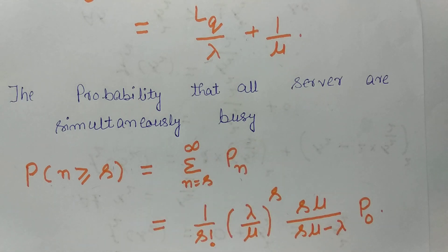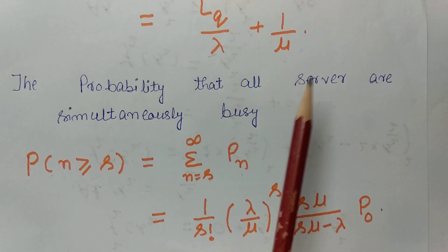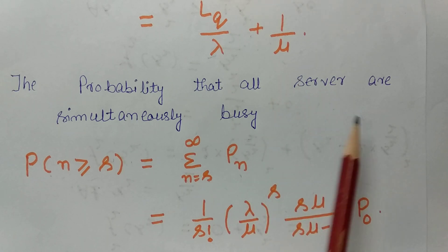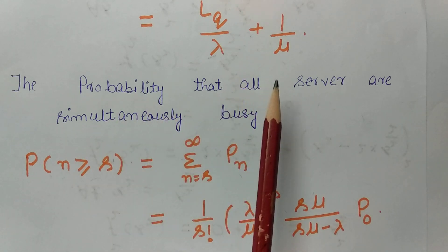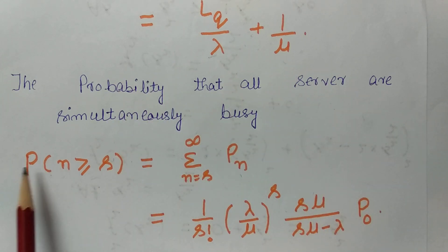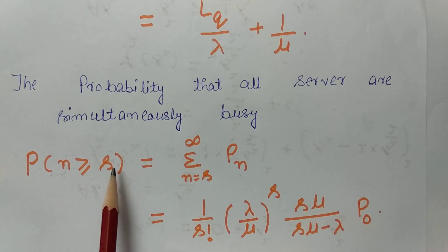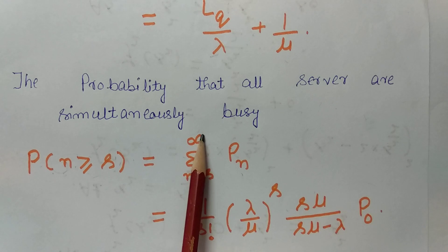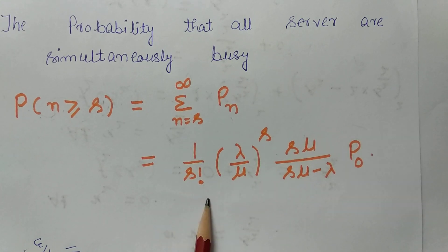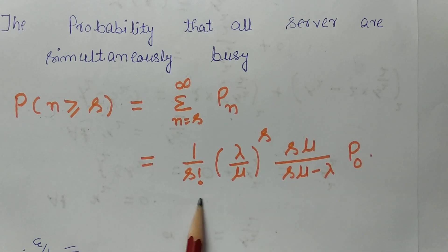The last formula is the probability that all servers are simultaneously busy. Servers remain busy when the number of customers is equal to or greater than the number of servers. Taking probability for n greater than or equal to s, and substituting Pn and simplifying, we get: (1/s!) times (λ/μ)^s times (sμ / (sμ − λ)) times P0.